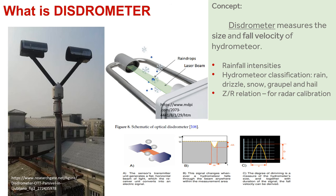But what is a distrometer? A distrometer is an instrument that measures the size and fall velocity of hydrometeors. Distrometers have a transmitter and a receiver. The transmitter generates a horizontal light beam, which the receiver converts into an electrical signal. When a raindrop enters or passes through this light beam, the electrical signal changes, and from the change in electrical pulses, the hydrometeor size and fall velocity can be derived.